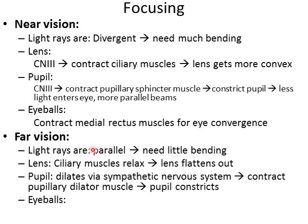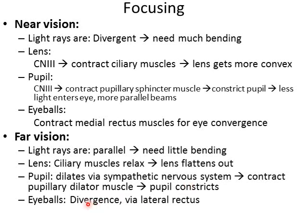Then the pupil is going to dilate via the sympathetic nervous system, contracting the pupillary dilator muscle and dilating the pupil. Then the eyeballs need to diverge via the lateral rectus muscles — they both move laterally in order to keep light focused on the fovea centralis. This is a very key concept for the course and for the exam, so make sure you've got this down.